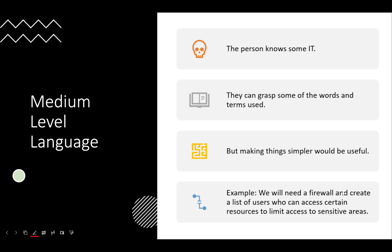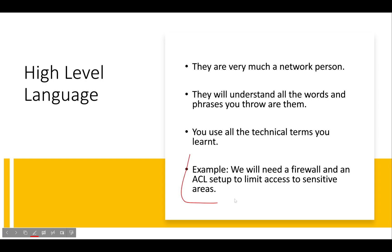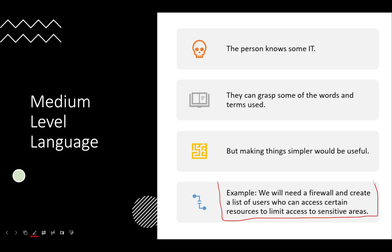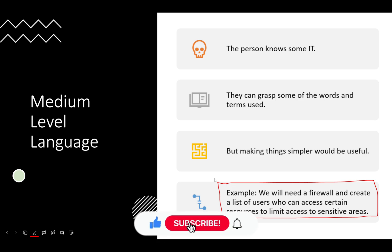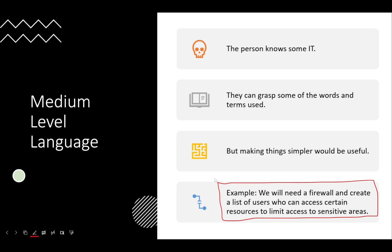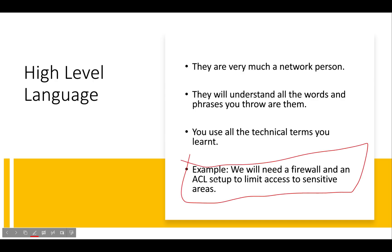A medium level example: 'We will need a firewall and create a list of users who can access certain resources to limit access to sensitive areas.' That says exactly the same thing as the high level version but in a way the medium level person can understand more, because if I simply say 'ACL' to someone who doesn't know what an access control list is, it's going to mean nothing to them — whereas a high level network specialist will understand it immediately.